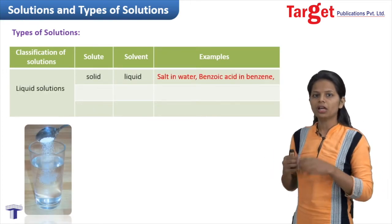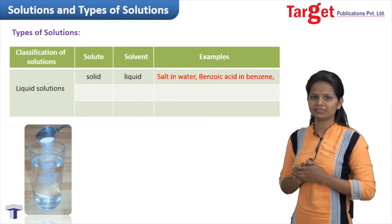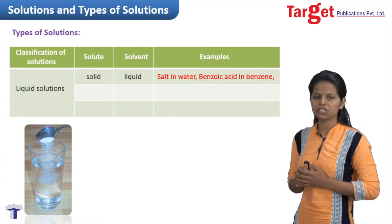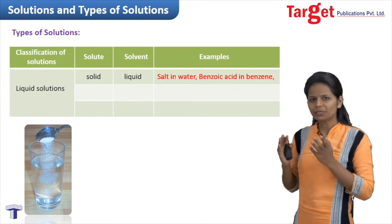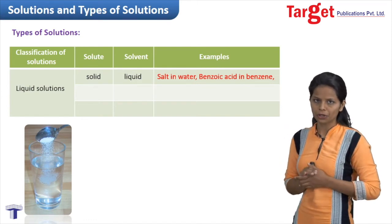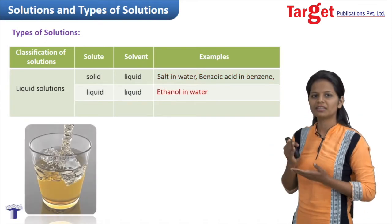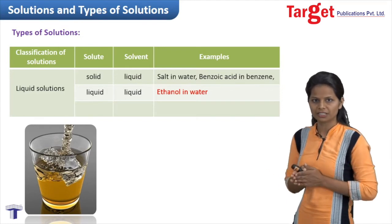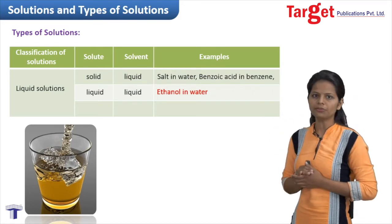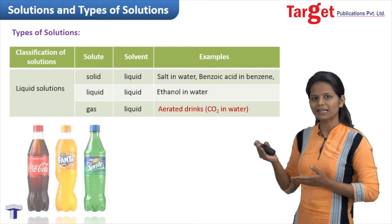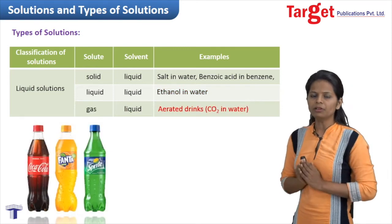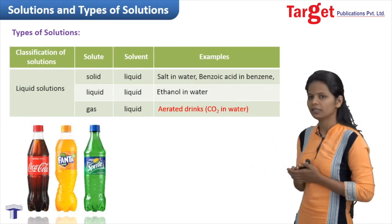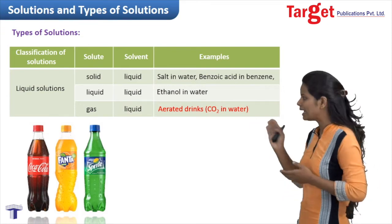Now let's look at liquid solutions — solutions wherein the solvent is present in liquid state. The first type is solid-in-liquid; the simplest example is salt or sugar added in water. The next type is liquid-in-liquid, for example ethanol added in water — both components are in liquid state. The final type of liquid solution is gas-in-liquid. We all drink aerated drinks wherein carbon dioxide gas is dissolved in liquid, making it a gas-in-liquid type of solution.